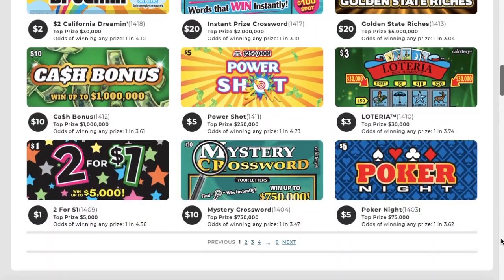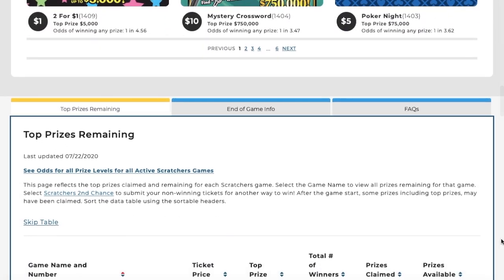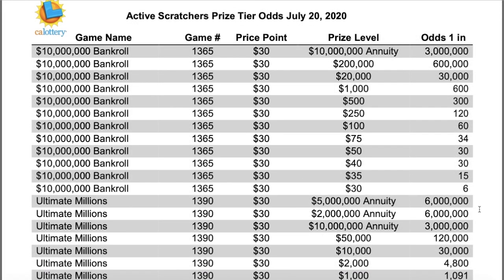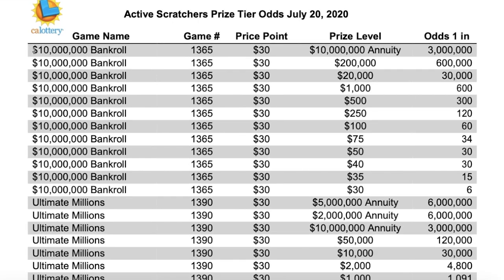A lot of these lotteries will actually have a more detailed breakdown of their prizes on their website, so today we're going to be looking at the California lottery. For each of the available tickets we have the game name, the ID number of the game, the price of the ticket, the prize level, and the odds of winning that given prize. And this is actually all we need in order to calculate the expected value of each ticket.